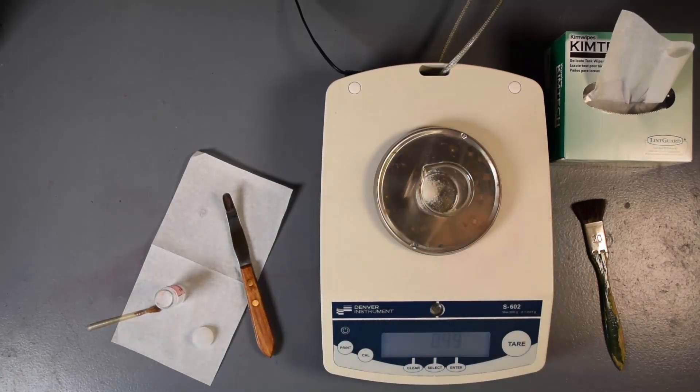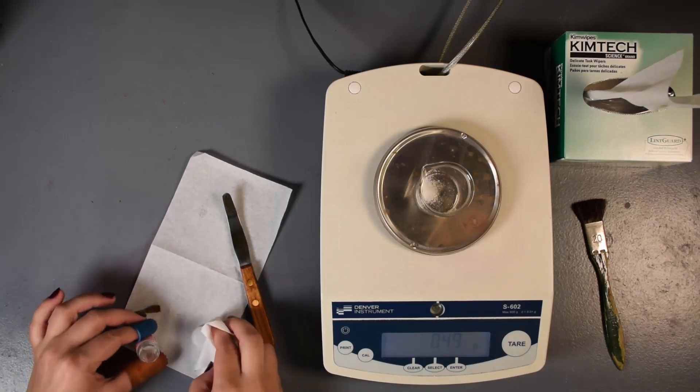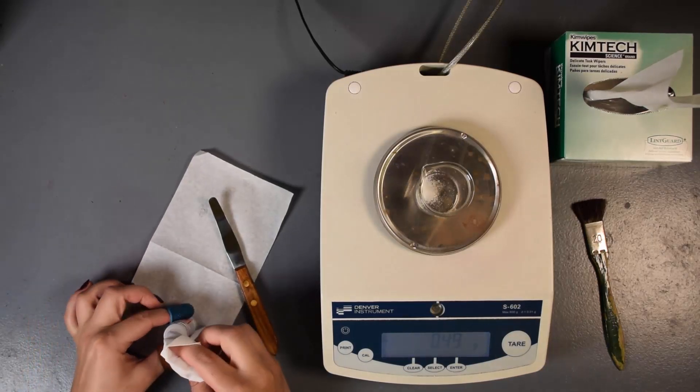Reweigh the beaker on the top loading balance. Once the desired amount is achieved, take your materials back to the analytical balance, making sure to not touch the container with your bare fingers.